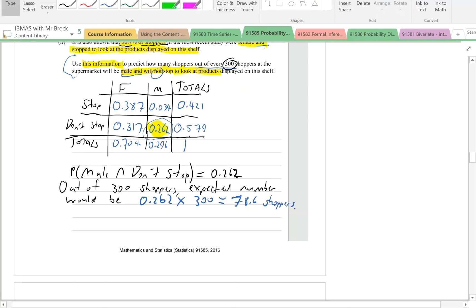78.6 people or shoppers. If we were trying to put that into context, we would say predict about 79 shoppers. And it's only an estimate.